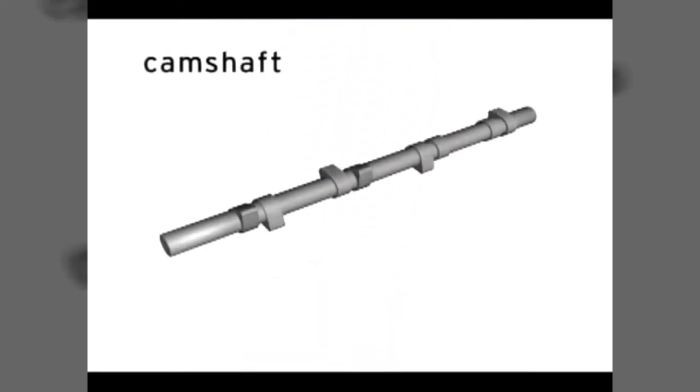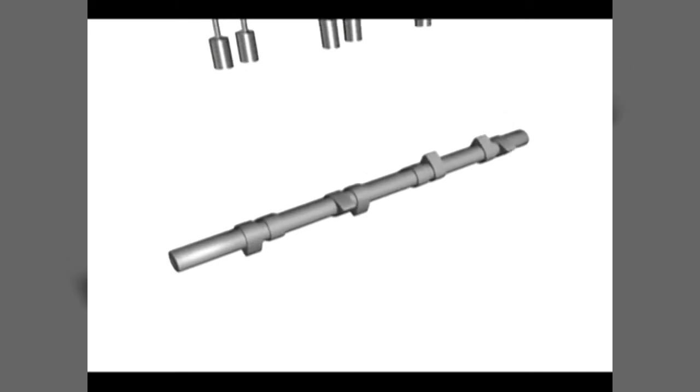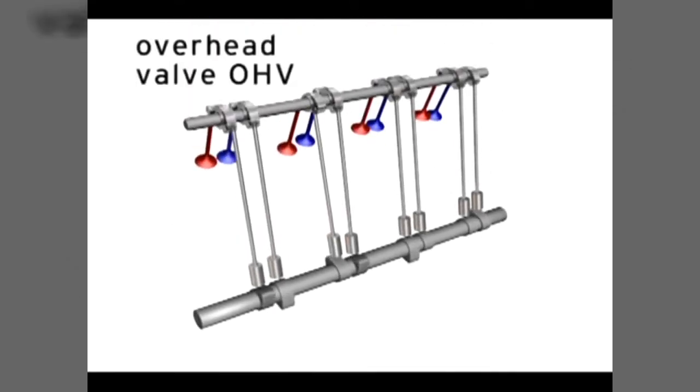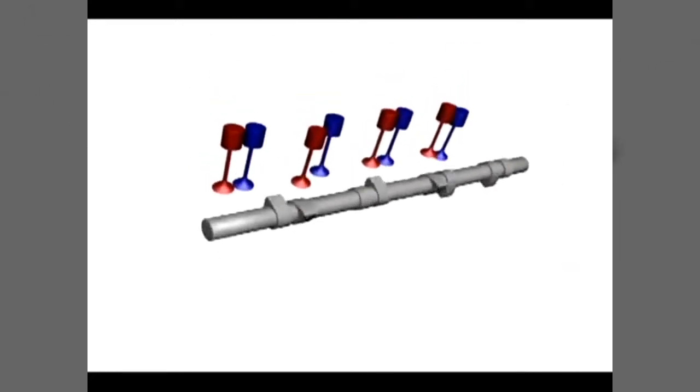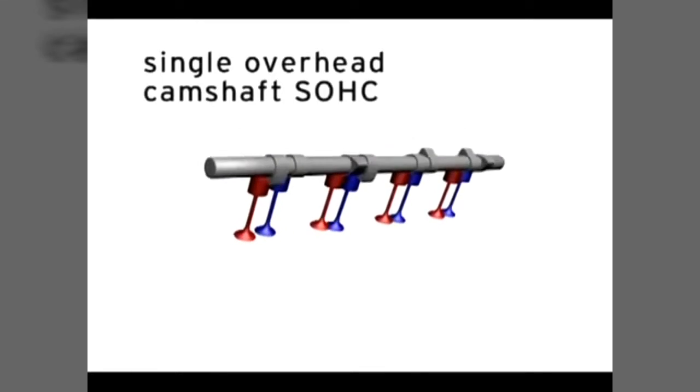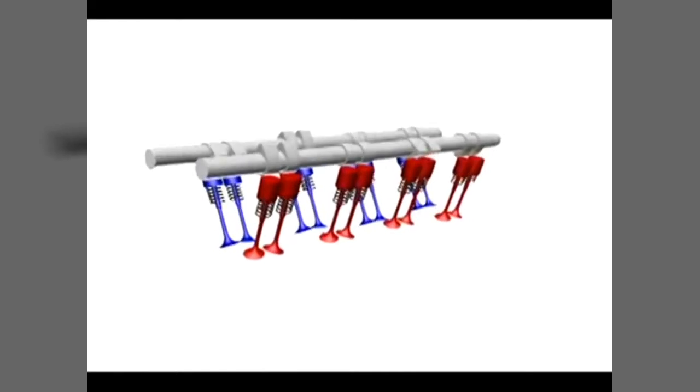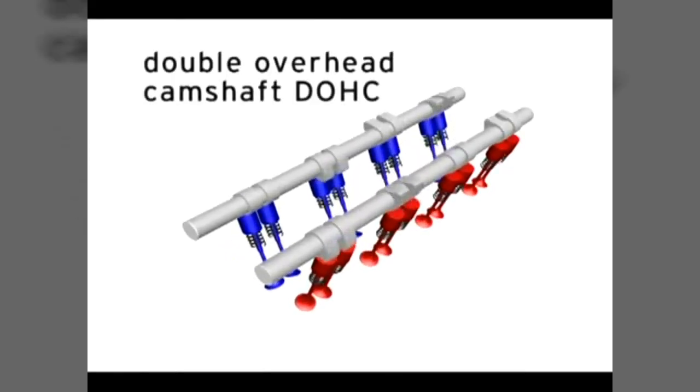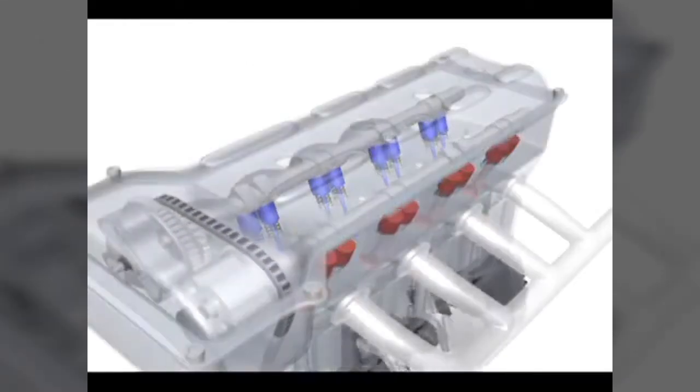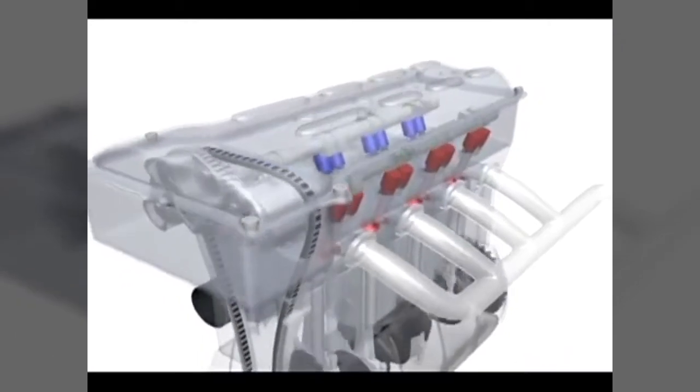The opening and closing of the valves is performed by the camshaft. Some engines use one camshaft with rocker arms and or push rods actuating all of the valves. If the camshaft is above the valves, it's called a single overhead camshaft or SOHC engine. When an engine uses a separate camshaft for the intake and exhaust valves mounted above the valves, this design is called double overhead camshafts or DOHC.